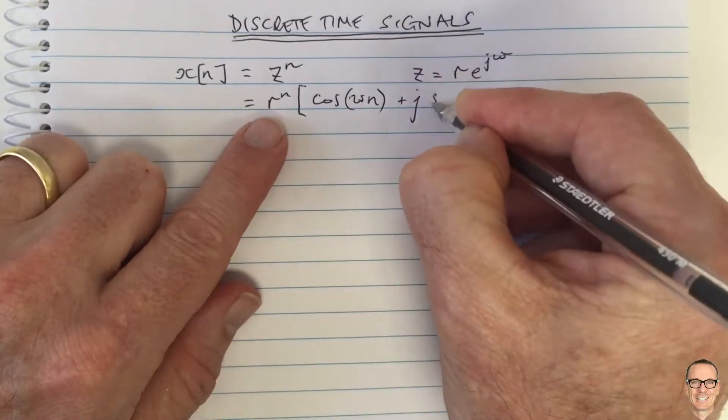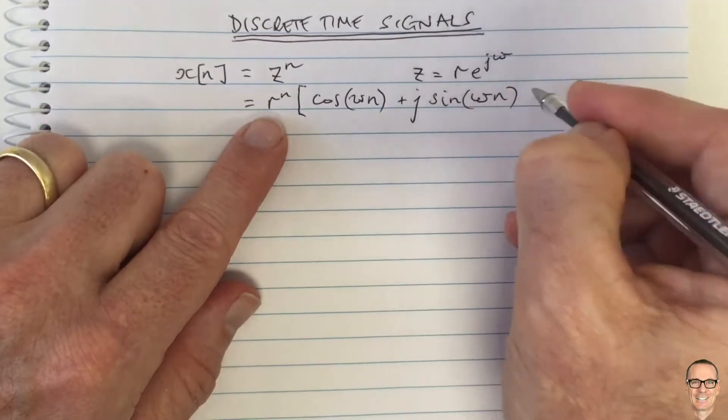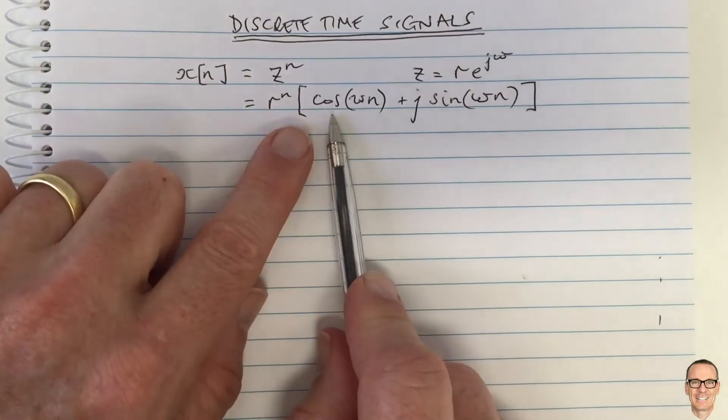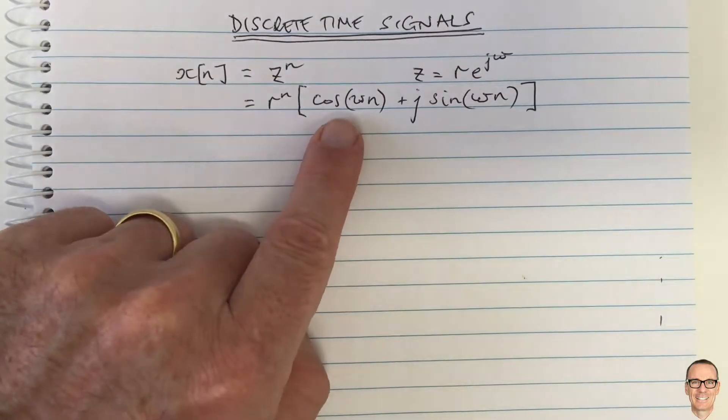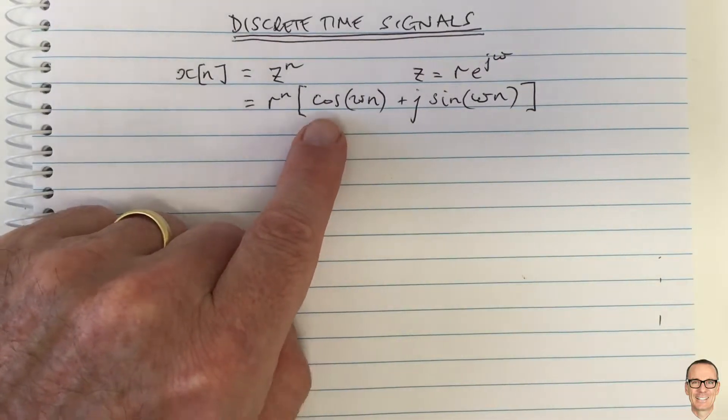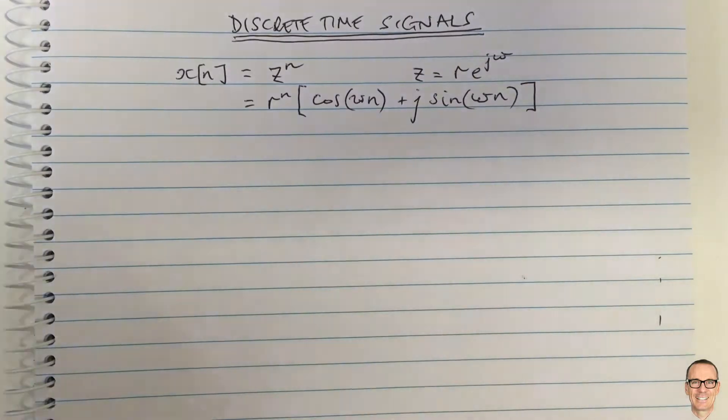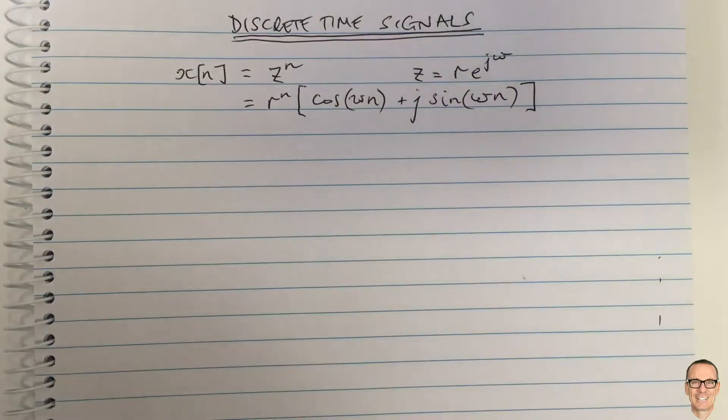When we look at it like this, we can see functions we're very familiar with from continuous time as important basis functions: the cosine wave and sine wave. If you put them into a linear system in continuous time, they come out at the same frequency. They may have their amplitude and phase changed, but the frequency remains the same. The same thing holds in discrete time.